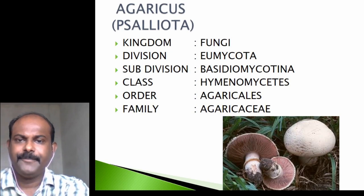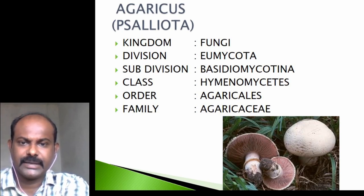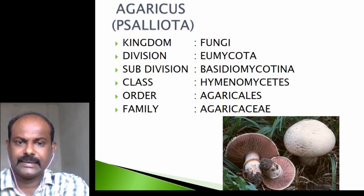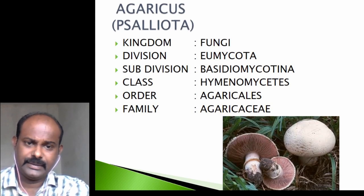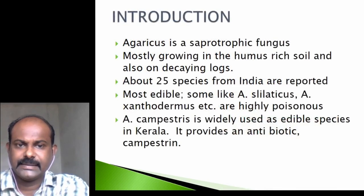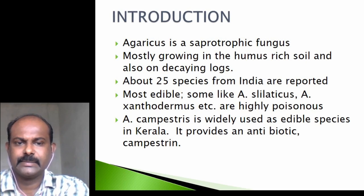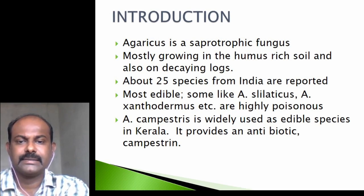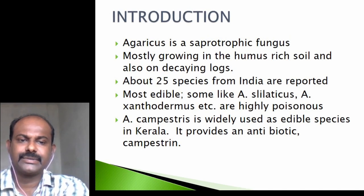We will now learn about Agaricus. Its systematic position: Kingdom Fungi, Division Eumycota, Subdivision Basidiomycotina, Class Hymenomycetes, Order Agaricales, Family Agaricaceae. Agaricus, also called Psalliota (the old name), is a saprophytic fungus mostly growing in humus-rich soil and on decaying logs. About 25 species from India are reported. Most are edible like Agaricus campestris, which is widely used in Kerala and provides an antibiotic called campestrin. Some species like Agaricus sylvaticus and Agaricus xanthodermus are highly poisonous.